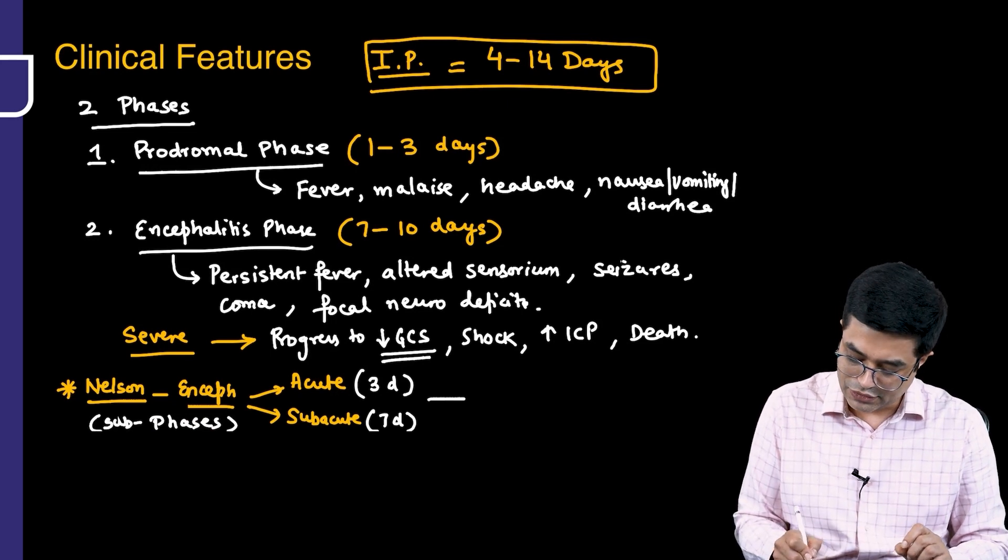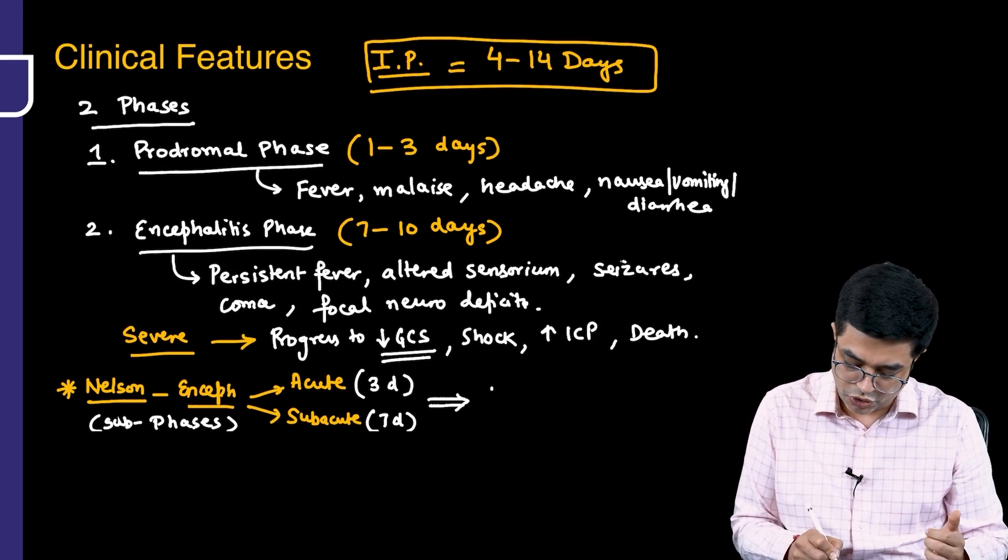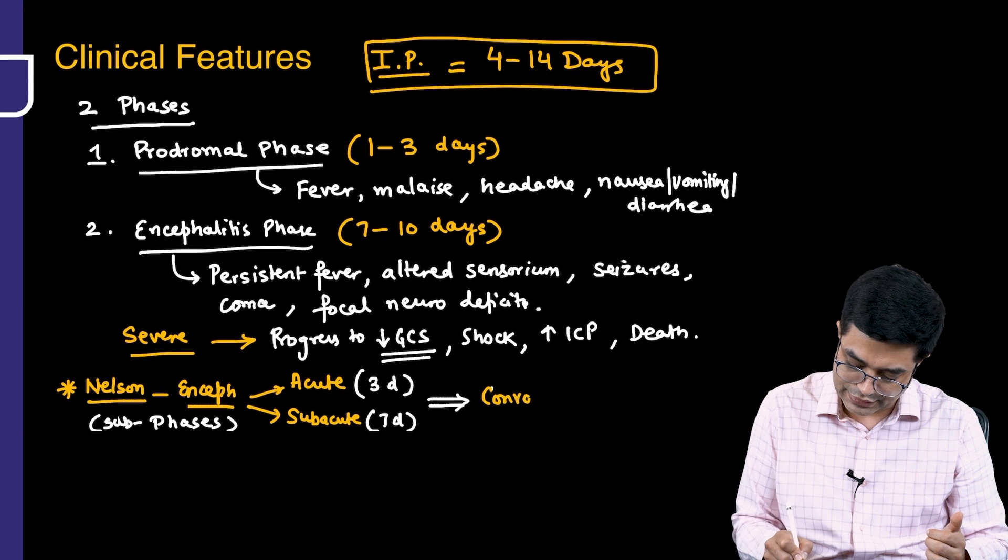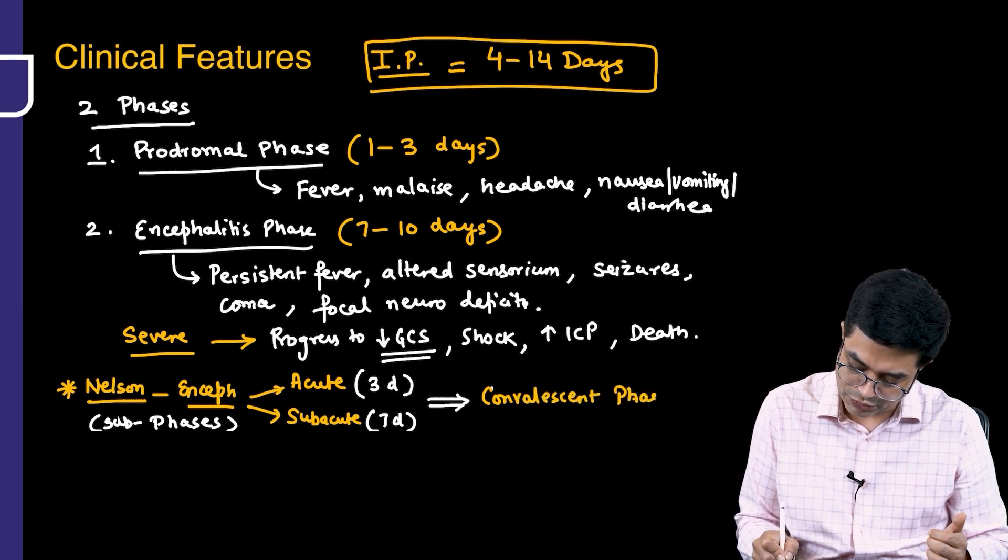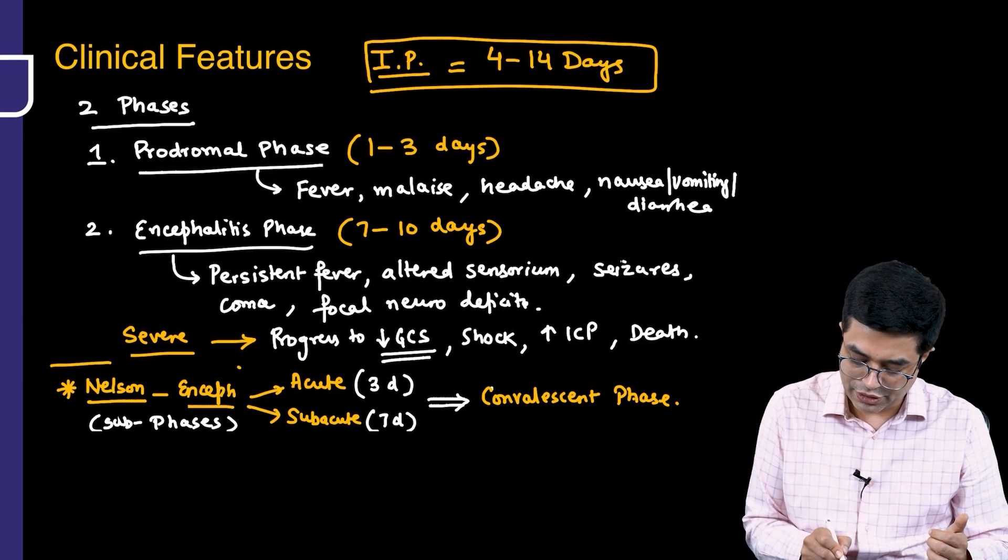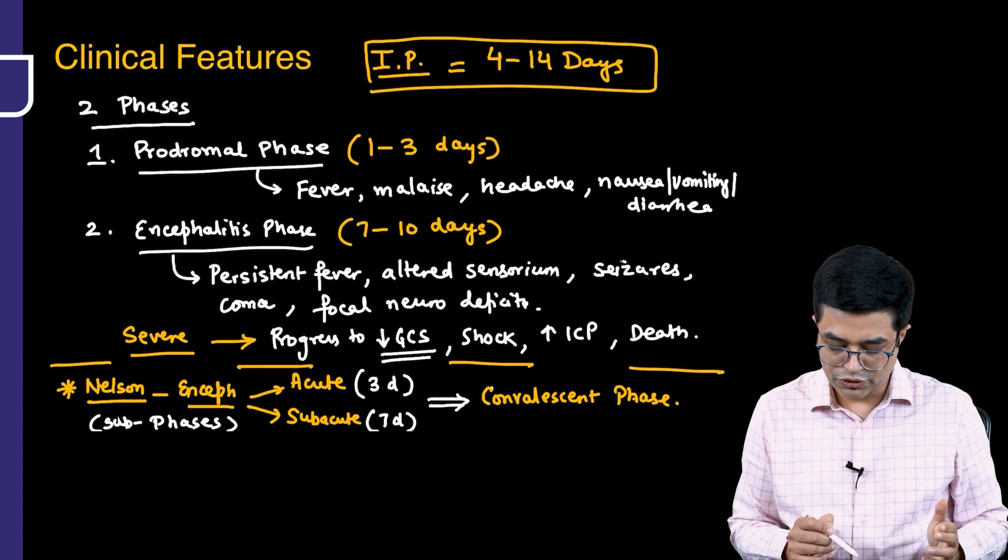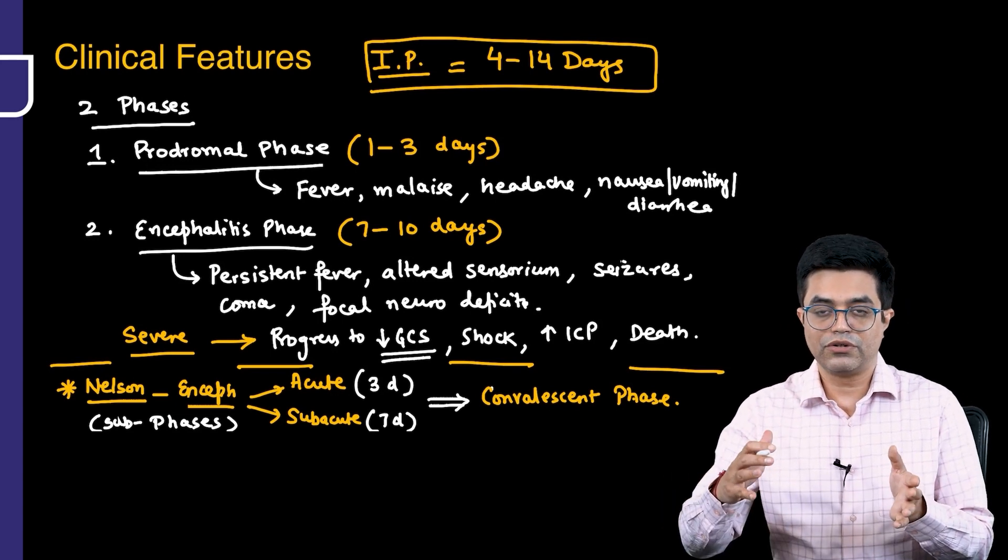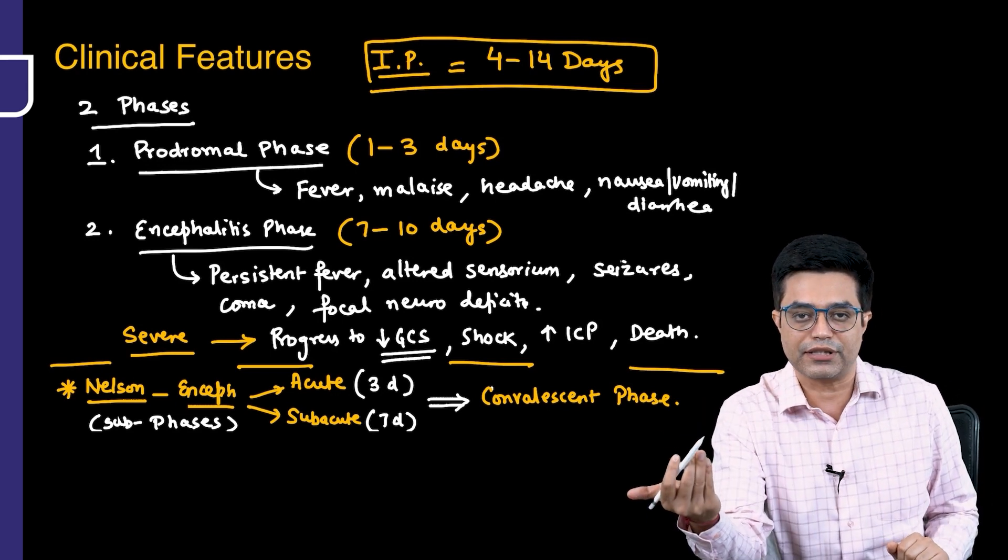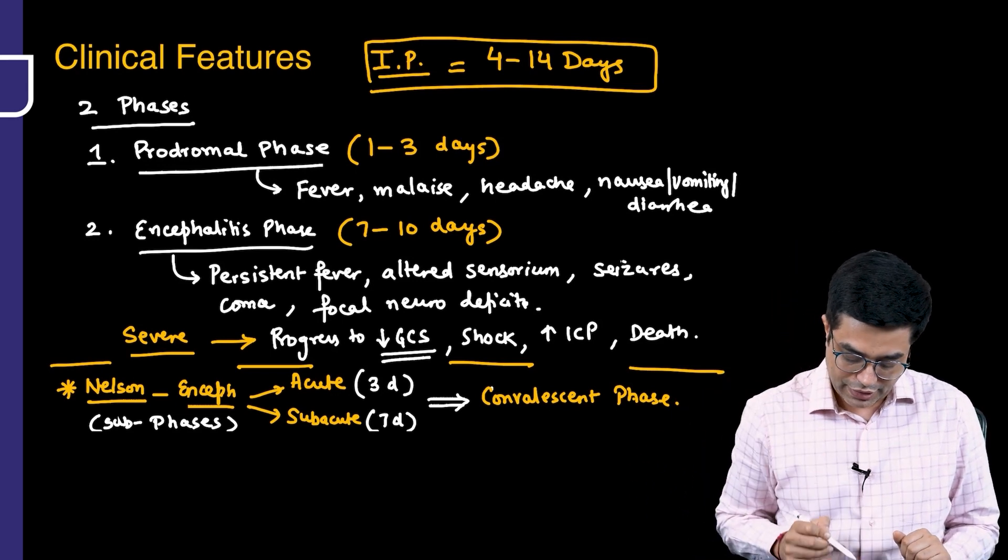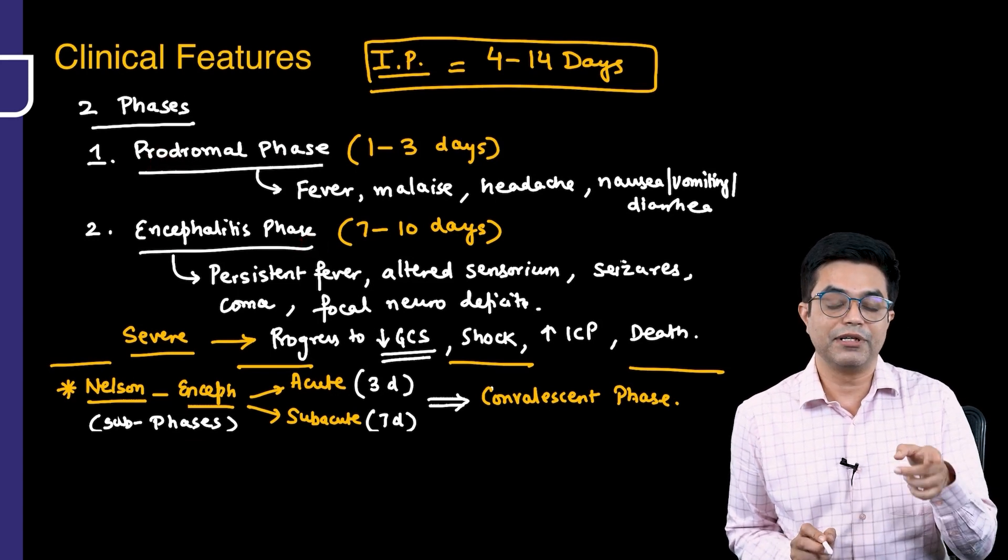Nelson also says that once patients start improving, they may go on to the convalescent phase. This description is given in certain Western textbooks. However, in the vast majority of Asian literature and Indian textbooks, you will not find this kind of depiction. It is just a different way of expressing the same progression. IAP says two phases - prodromal and encephalitis - but an examiner can ask if Nelson talks about these phases differently.